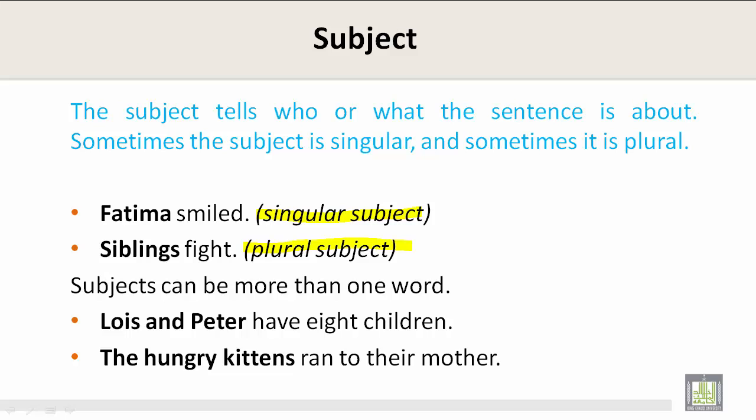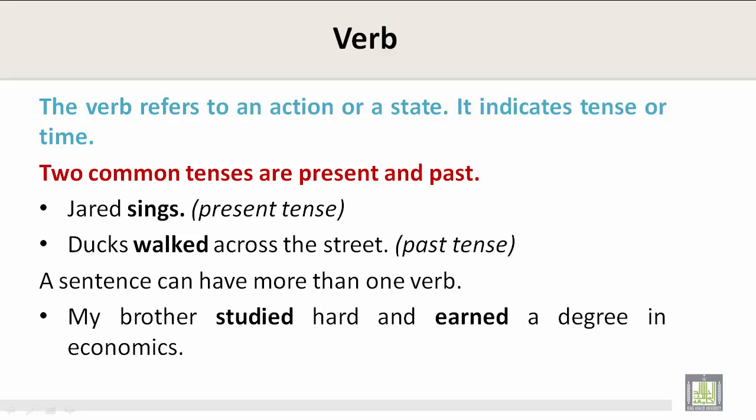Siblings has an S. Subjects can be more than one word. For example: Lois and Peter have eight children. The hungry kittens ran to their mother. In both of these examples, Lois and Peter are the subject, and the hungry kittens are the subject. However, it is more than one word.